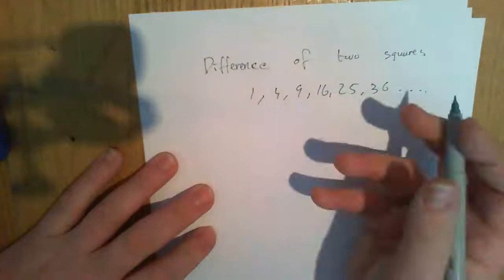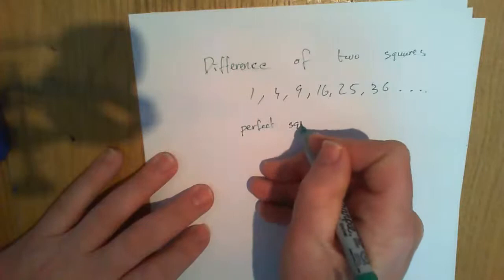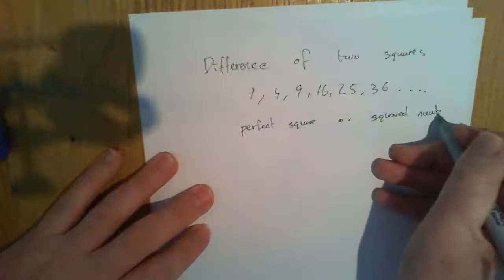Each of those numbers is what's called a perfect square, or a squared number.